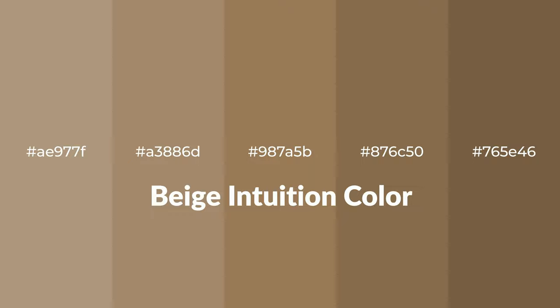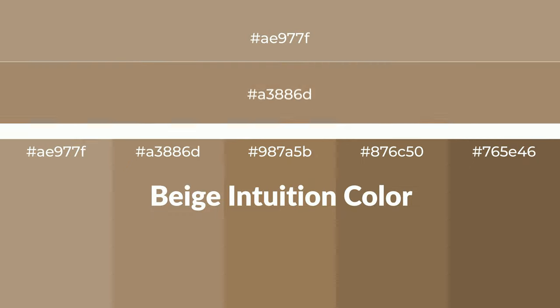Warm shades of beige — intuition color with brown hue — for your next project. To generate tints of a color, we add white to the color. Tints create light and exquisite emotions. To generate shades of a color, we add black to the color, and it is used in patterns, 3D effects, and layers. Shades create depth and drama.